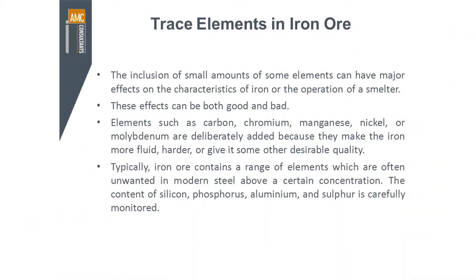One of the important things with iron ore is the issue of trace elements. The inclusion of quite small amounts of some elements can have a very major impact or effect on the characterisation of ore and the use of iron ore in steelmaking production. Sometimes these effects are very good and sometimes they're very bad. Things like carbon, chromium, manganese, nickel, and molybdenum are deliberately added to impart a particular character, durability, strength, or other desirable feature that allows the steel to be used for particular applications.